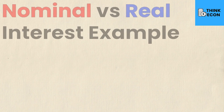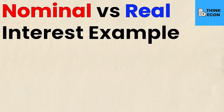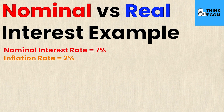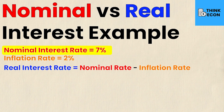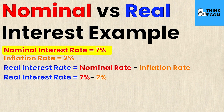Let's solidify our understanding with an example. Suppose in an economy you're given the nominal interest rate at 7% and the inflation rate at 2%. The nominal interest rate is simply 7%. The real interest rate follows the formula: real interest rate equals nominal rate minus inflation rate, so 7% minus 2% equals 5%.